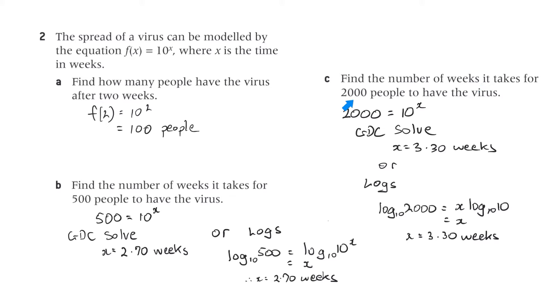And part c, find the number of weeks it takes for 2,000 people to have the virus. Well, very similar to b. We just put 2,000 here, and we use solve, and we get 3.30 weeks, or using logs, we get 3.30 weeks. Same answer there.